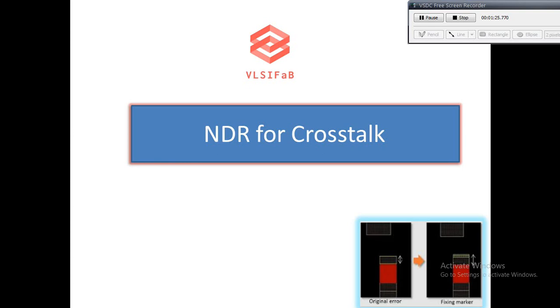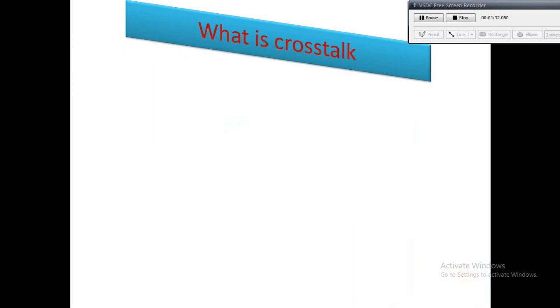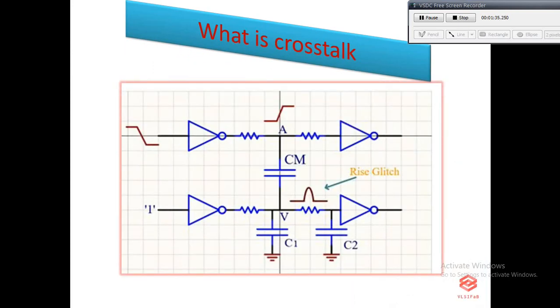So what is crosstalk? In short, in deep submicron technology, less than 130 nanometers and below, the capacitance between nets or wires on silicon becomes much more dominant than the interlayer capacitance.